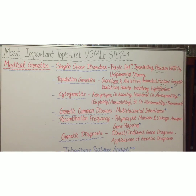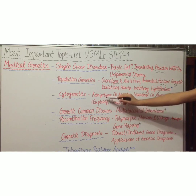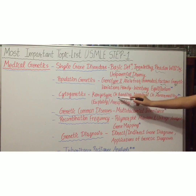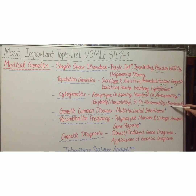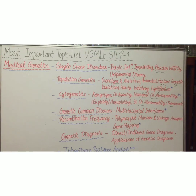The next topic is cytogenetics. Subtopics include karyotype, chromosomal banding, numerical chromosome abnormalities such as euploidy and aneuploidy, and structural chromosomal abnormalities such as translocation. The next topic is genetic common diseases, where you will study multifactorial inheritance, which is an important subtopic.